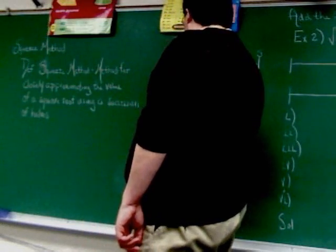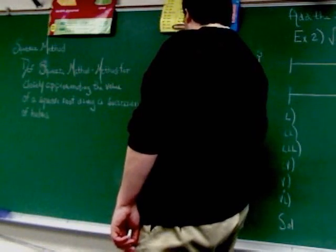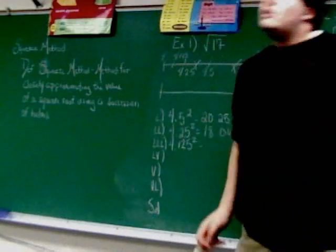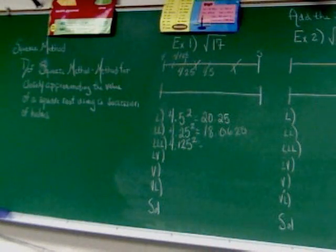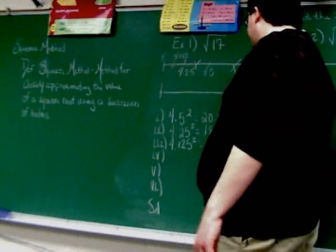So I'm going to take 4.125 and square it. 4.125 squared is equal to 17.015625.